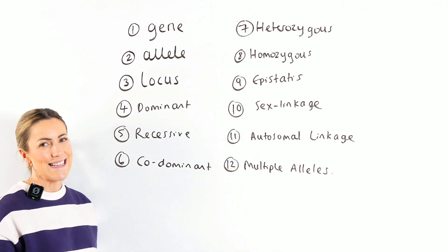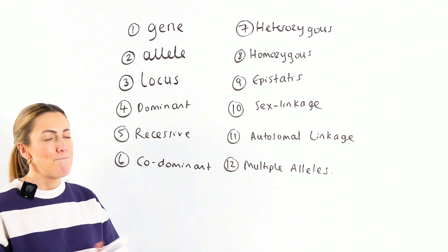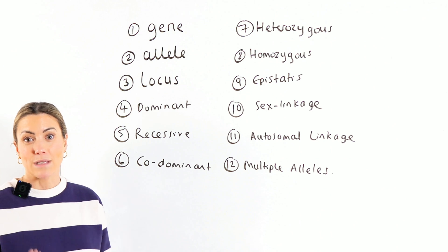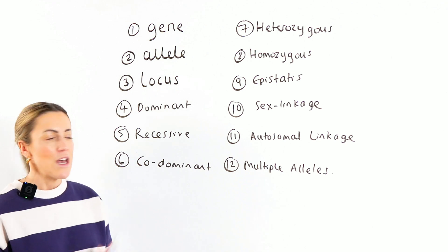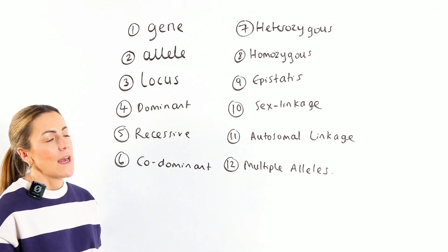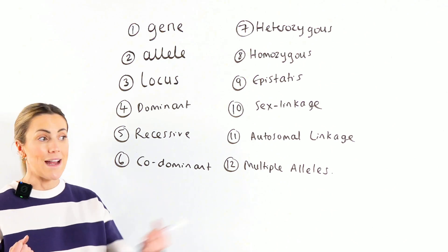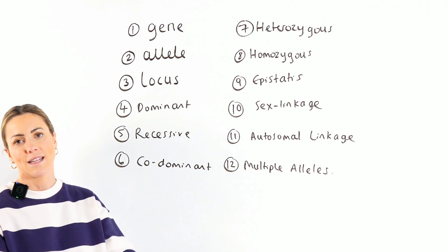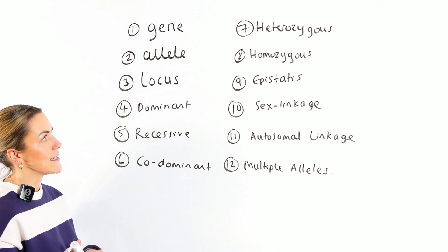Codominant, easy. Both alleles are expressed. That's it. They're both codominant. Both alleles are going to be expressed at the same time, which means you might get an intermediate phenotype. So in like flower colour, if red and white are codominant and the offspring inherits both the red and the white, they're both expressed. So the flower might be pink. They're both expressed. It's that easy.